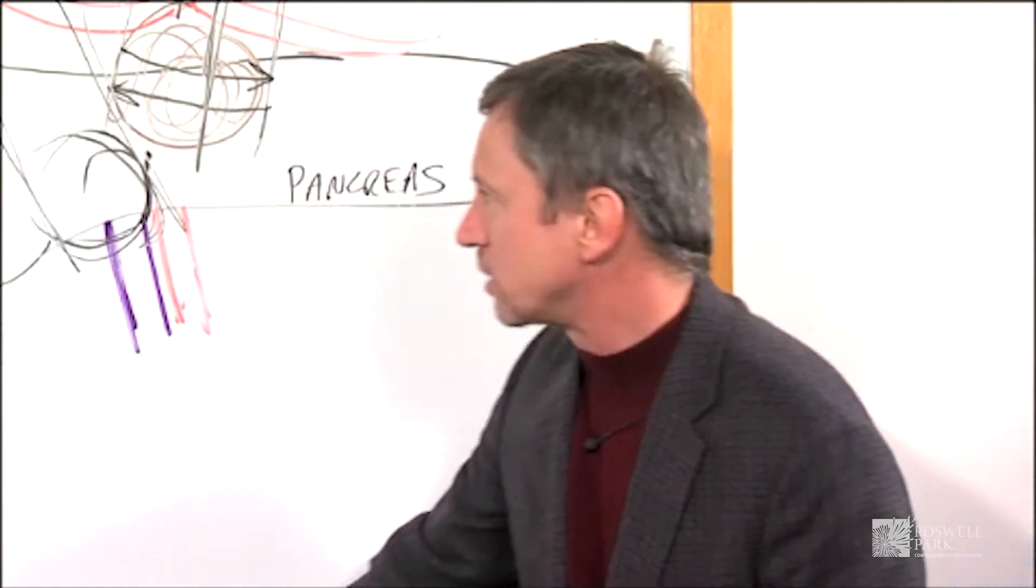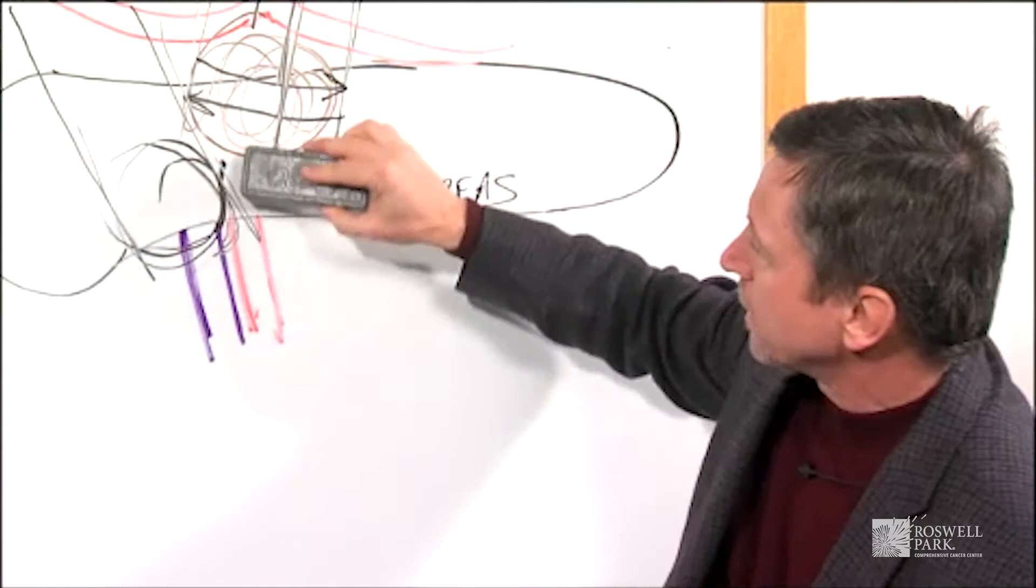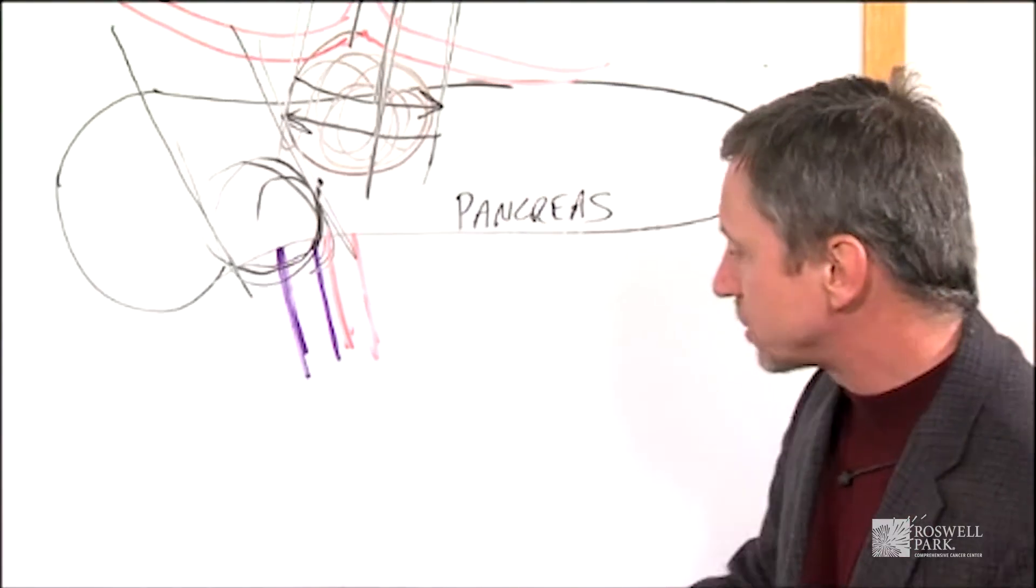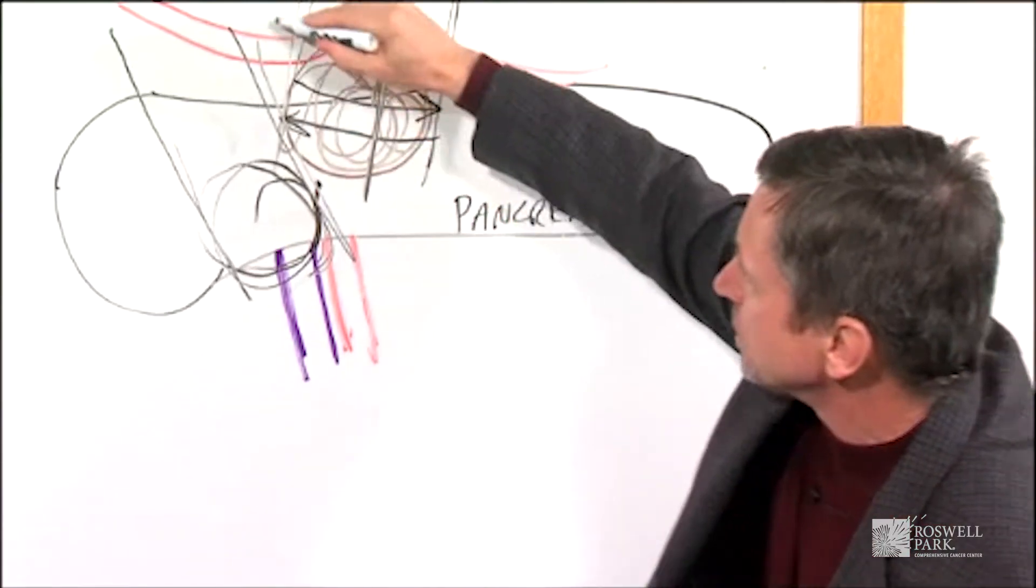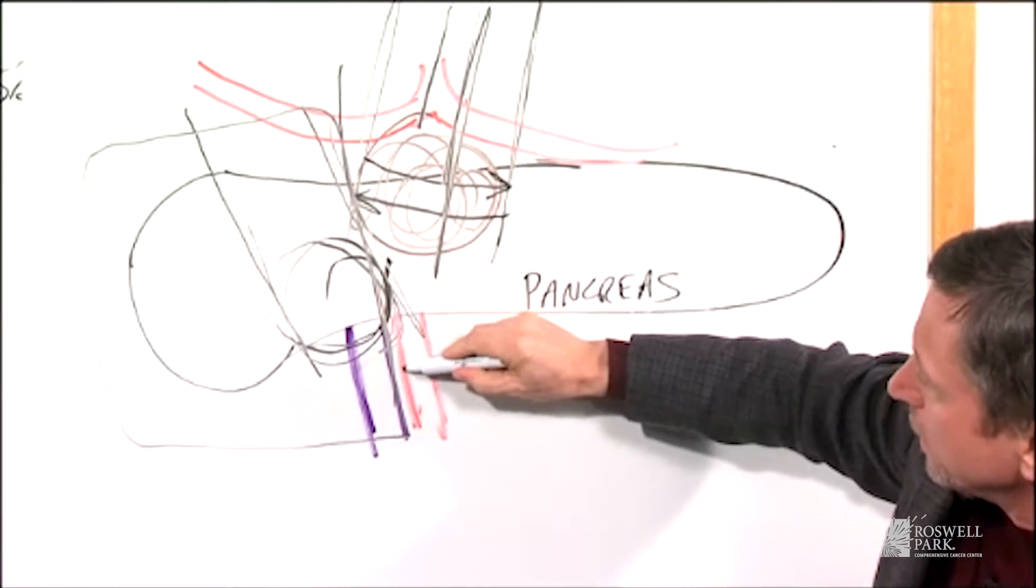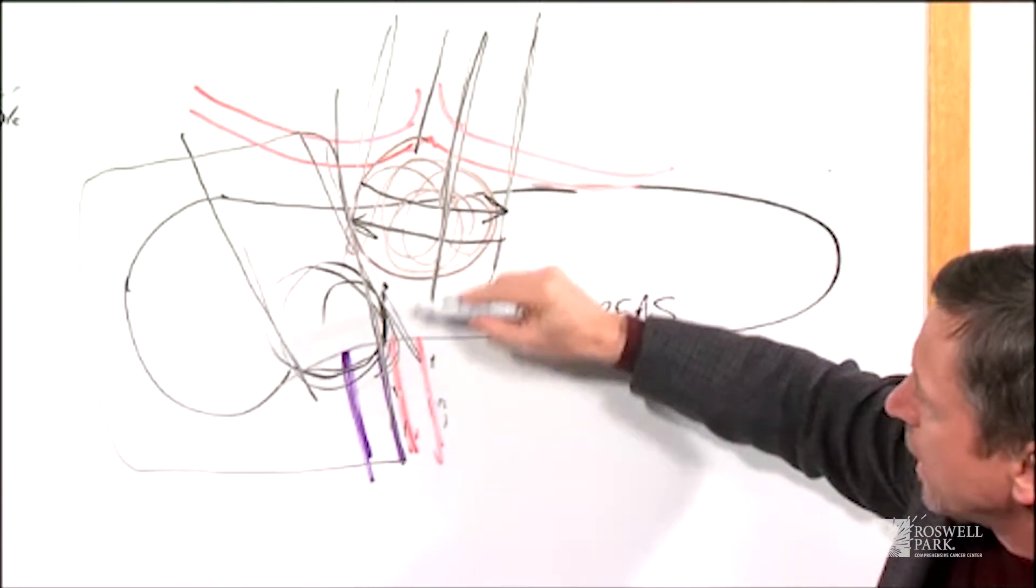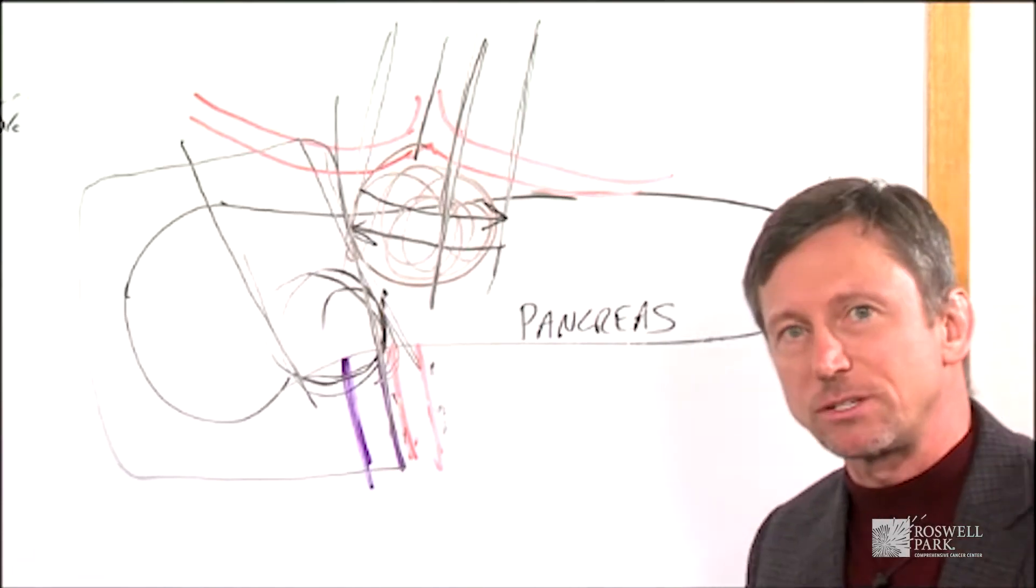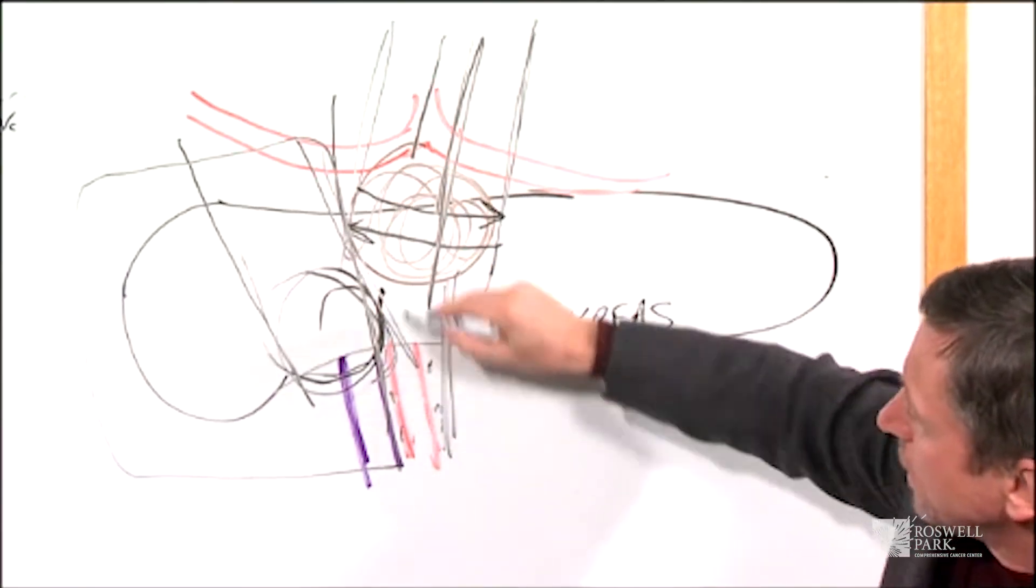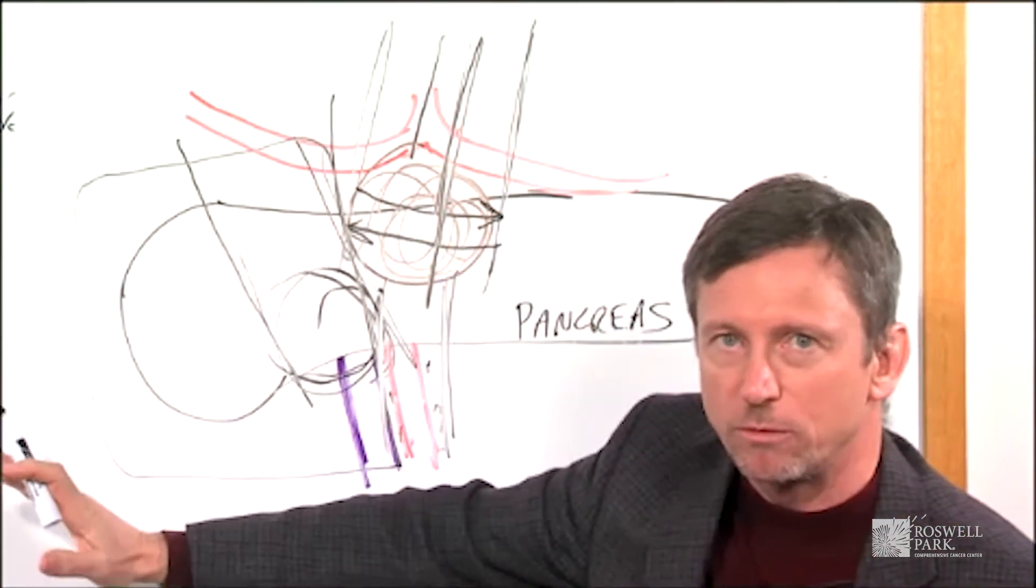There's one other indication for this situation where you have a tumor like this that's up against the major blood vessels. As opposed to taking the tumor out, for example doing a Whipple procedure and removing the head of the pancreas where we might be leaving tumor cells behind on the blood vessel, you can use the NanoKnife in addition to surgery and use the NanoKnife to kill the tumor cells that might be on the artery, but then go ahead and remove the tumor.